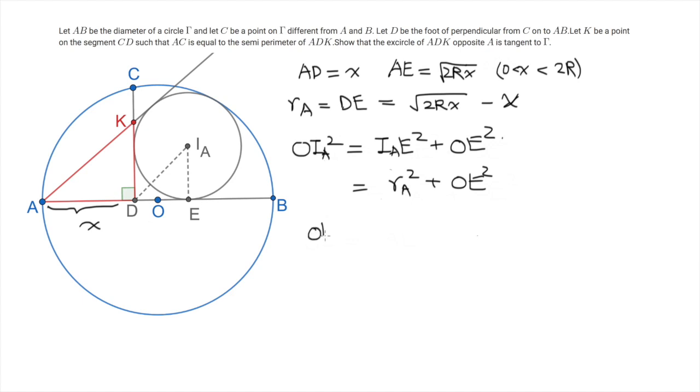Then we just need to evaluate OE, which is the difference between AE and AO. So here I use a vector-wise notation because otherwise you need to distinguish the case that AE is larger than AO or smaller than it. But using the absolute value solves this problem. So OE is the absolute value of the difference between square root of 2RX and R.